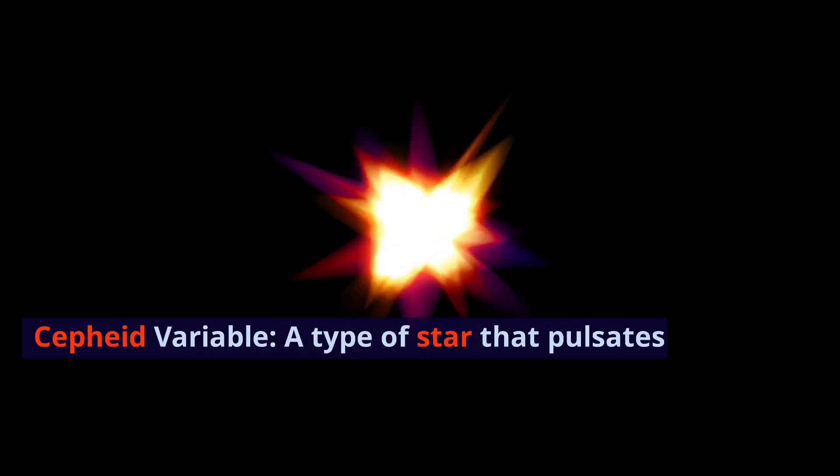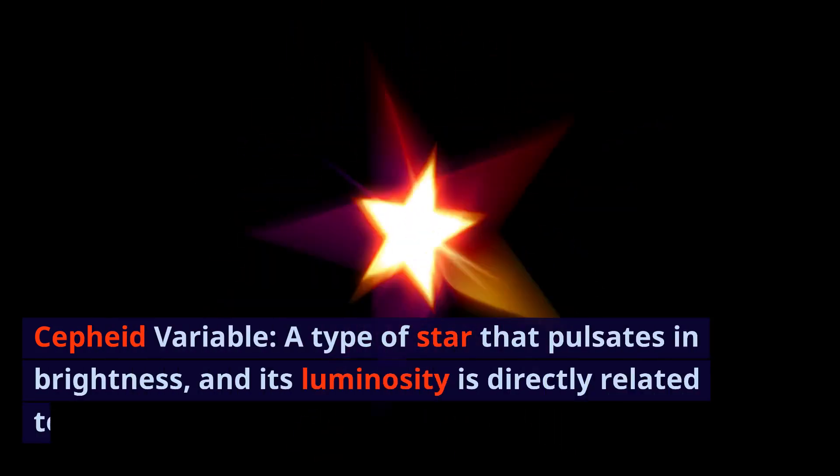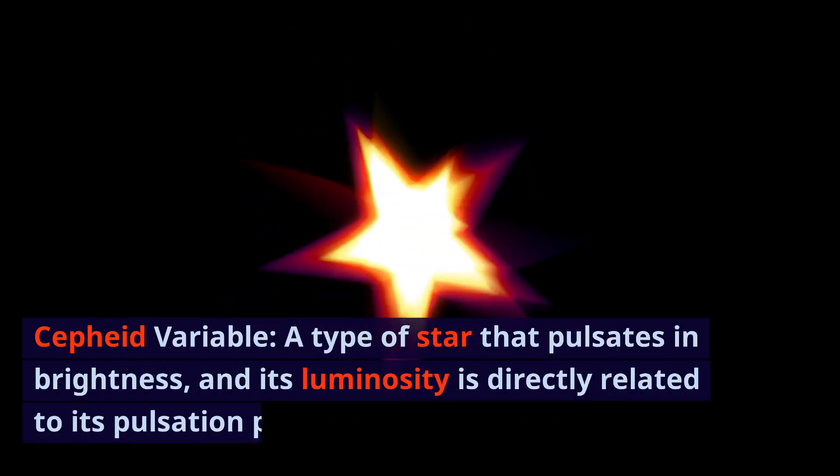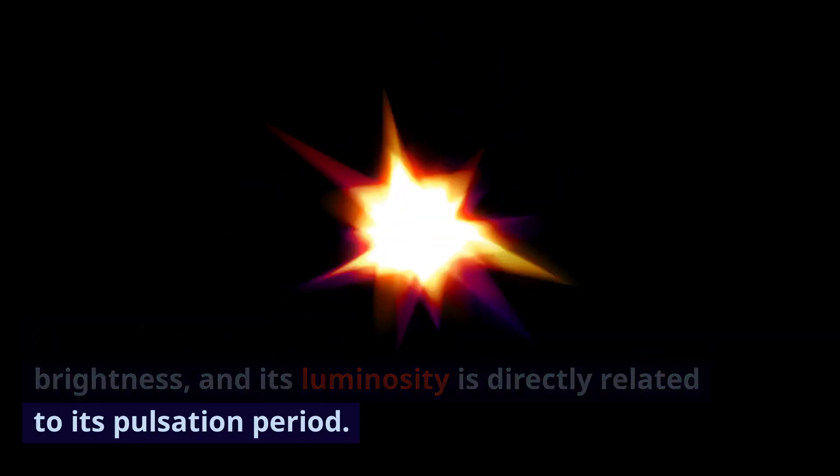Cepheid Variable: a type of star that pulsates in brightness, and its luminosity is directly related to its pulsation period.